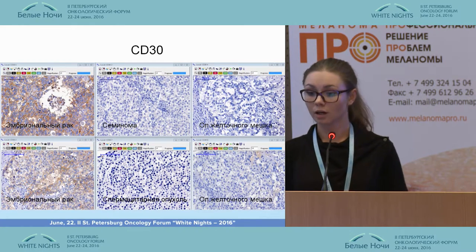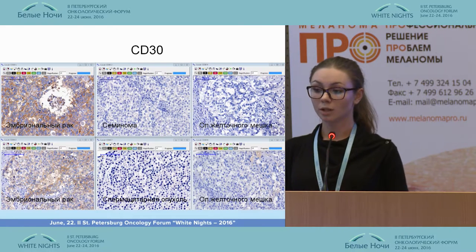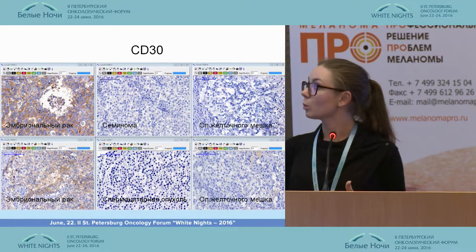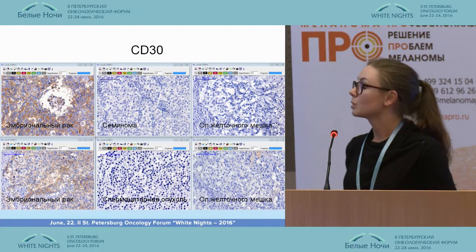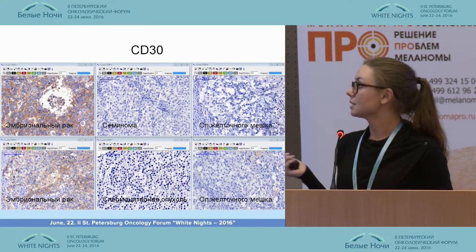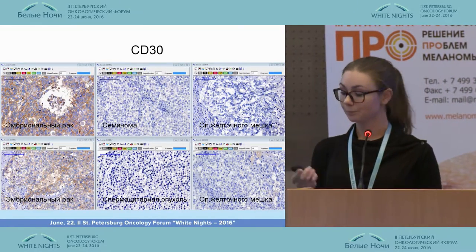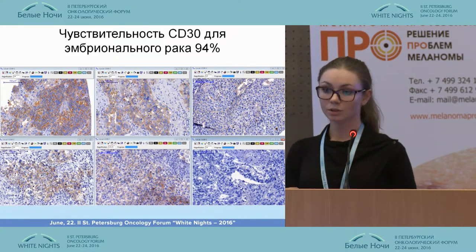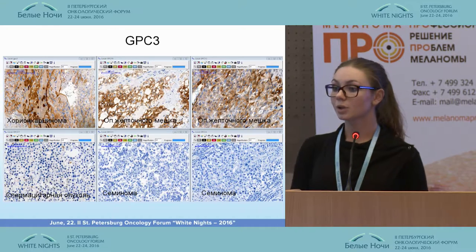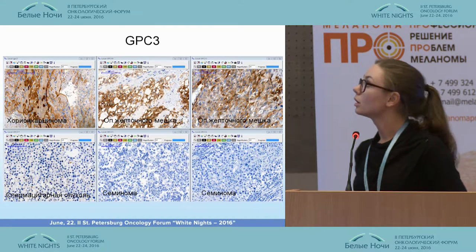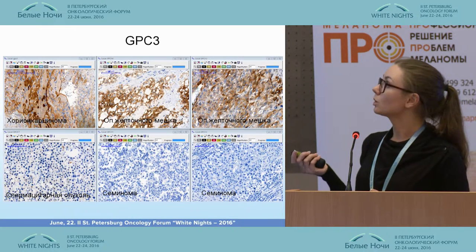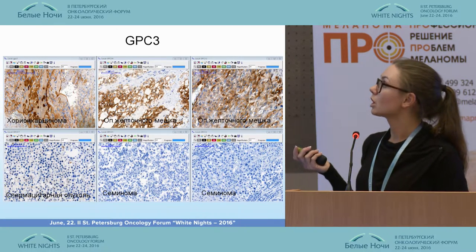CD30 is a specific marker for embryonal cancer with membrane coloring. According to the literature, it should be expressed quite colorfully, but depending on the selection of the antibody clone, we can even see negative CD30 results for embryonal cancer. Sensitivity is almost 100 percent.